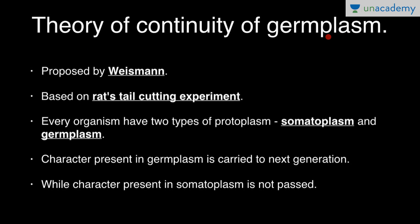The theory of continuity of germ plasm was proposed by Weismann based on a rat tail-cutting experiment. He took rats, cut their tails for several generations, but in every next generation he found the tail was almost the same size — it was not reduced or absent. According to him, every organism has two types of protoplasm: somatoplasm and germ plasm.